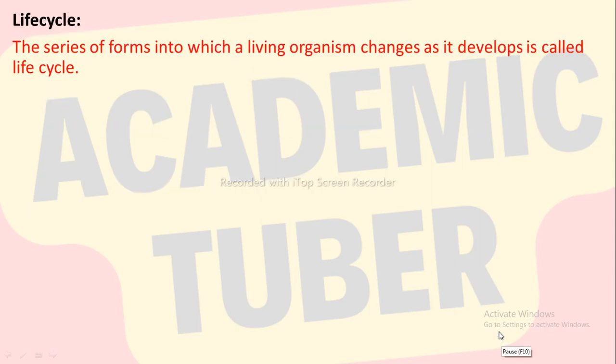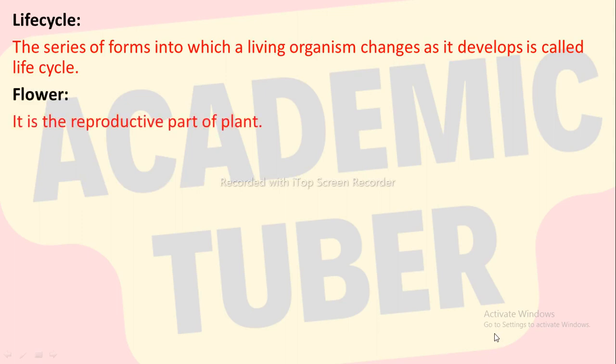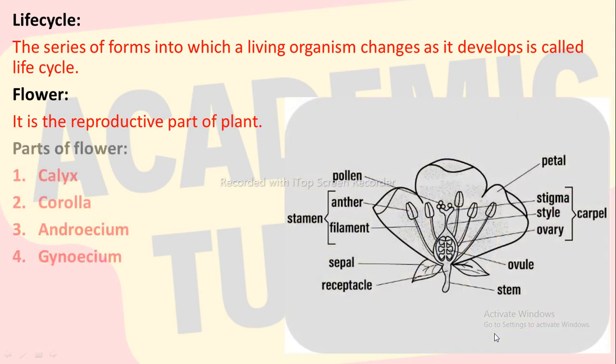Life cycle. The series of forms into which a living organism changes as it develops is called life cycle. Flower: it is the reproductive part of a plant. It has four parts: calyx, corolla, androecium and gynoecium.